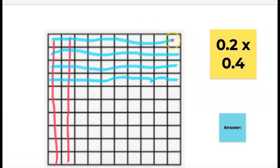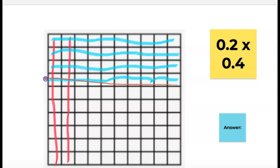In the opposite direction I'm going to draw my four tenths, which would be four rows of hundredths. And where they cross is where my answer is — only in this little rectangle where those two numbers cross.